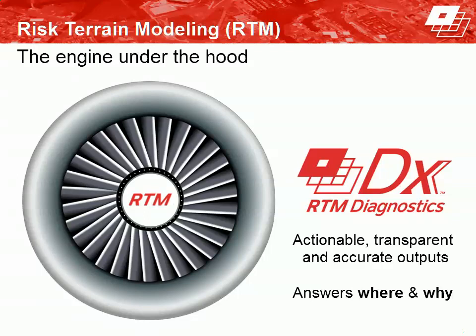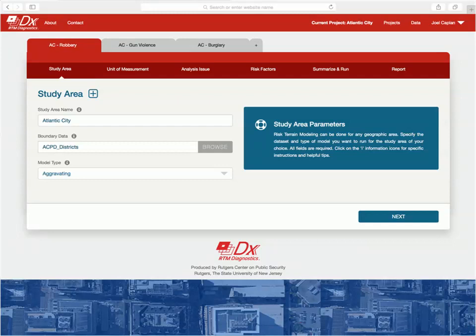Risk terrain modeling is the engine under the hood of the Risk Terrain Modeling Diagnostics software, or RTMDX. In just a few steps, the software diagnoses how your data relates to features of the environment, how these features interact, and where they co-locate to attract certain types of behaviors resulting in the outcome events, particular to your town, state, or region. The software is in a new iteration — it's being updated, and it's pretty easy and straightforward to use, with multiple projects and multiple analyses available.